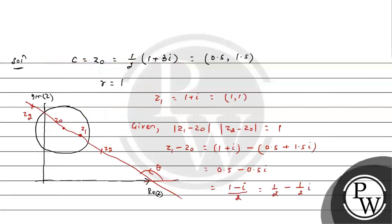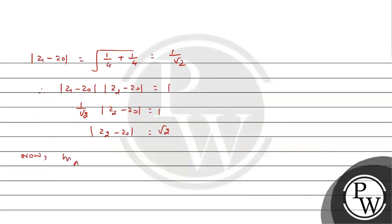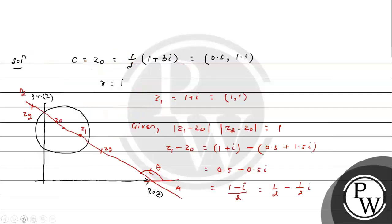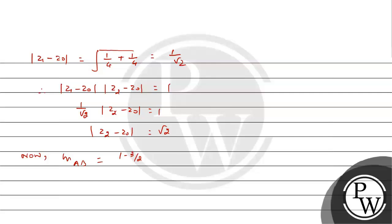Now, slope of line AB: z1 has coordinates (1, 1), z0 has coordinates (1/2, 3/2). Slope = (1 - 3/2)/(1 - 1/2) = (-1/2)/(1/2) = -1. So tan θ = -1, which means θ = 3π/4 or 135°.